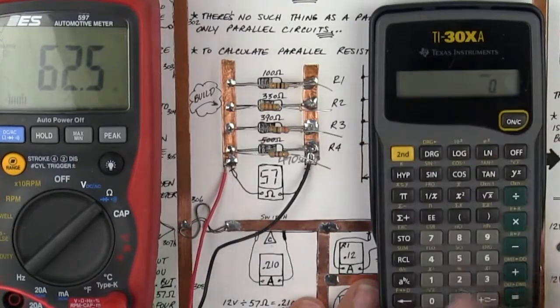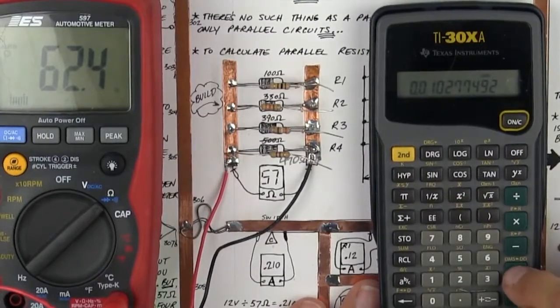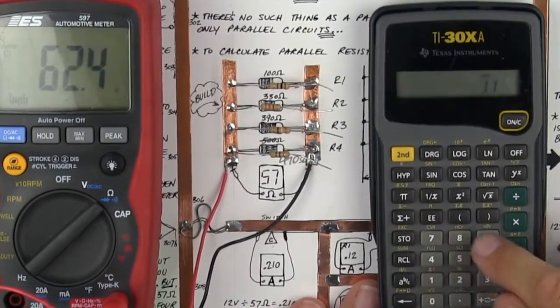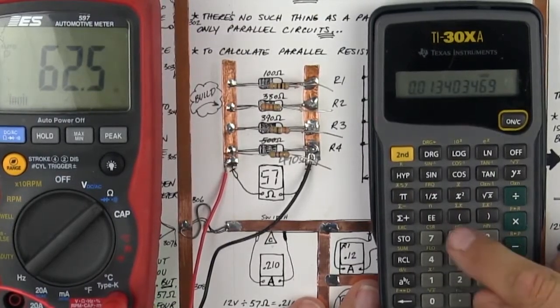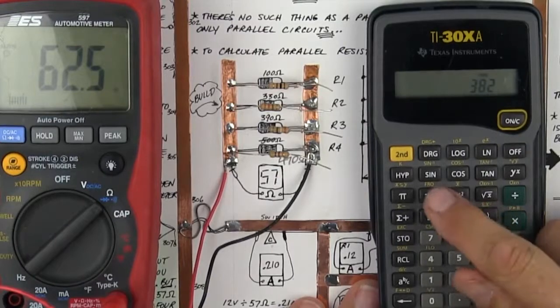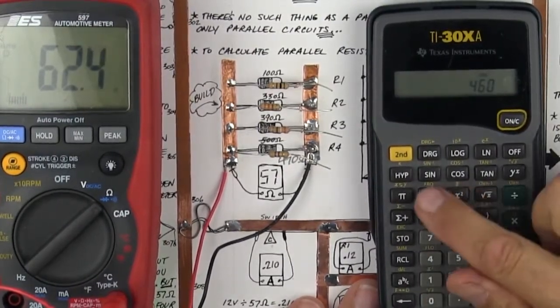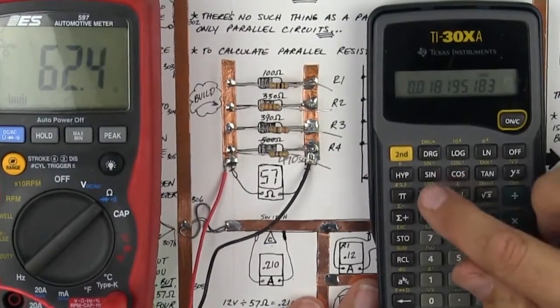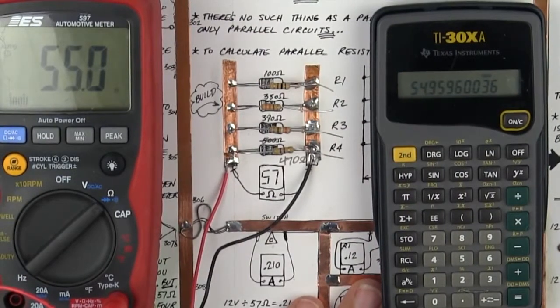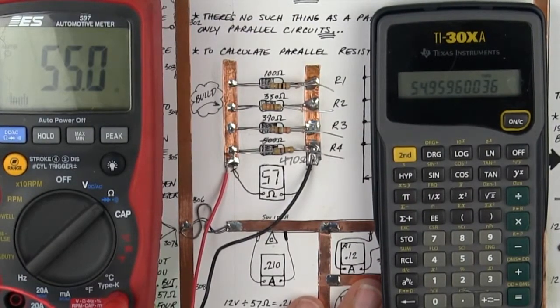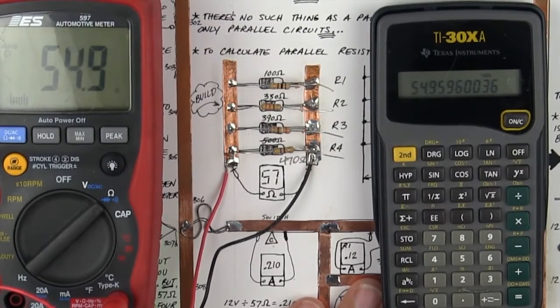All right. So let's do it all again, just for practice. 97.3 inverse plus 319.9 inverse plus 382 inverse plus 460 inverse equals inverse 54.9. So that's the math for parallel circuits.